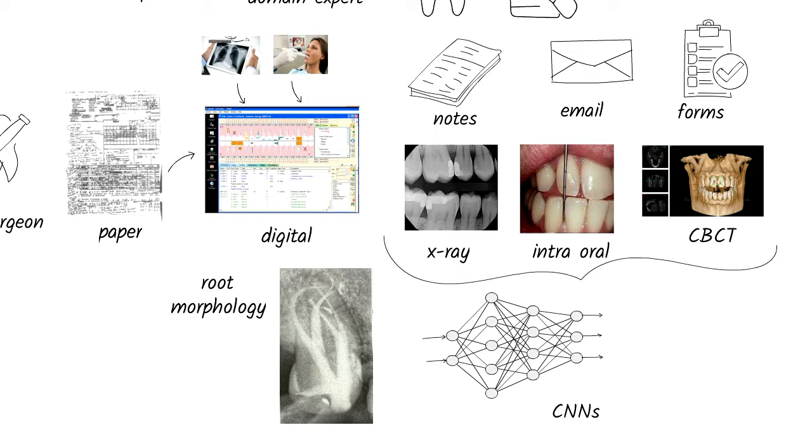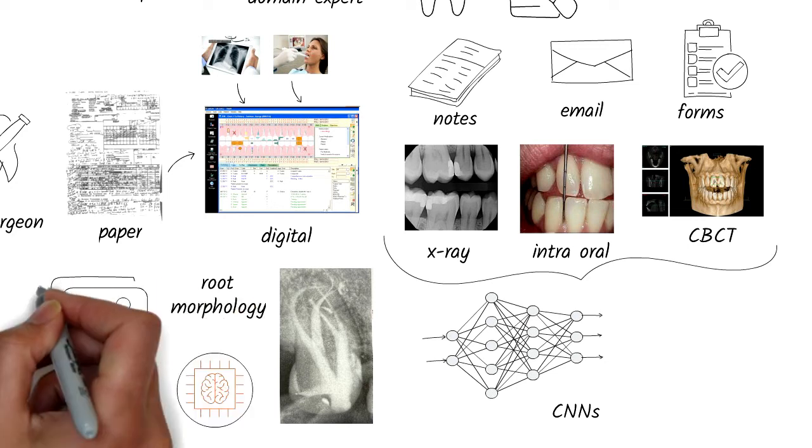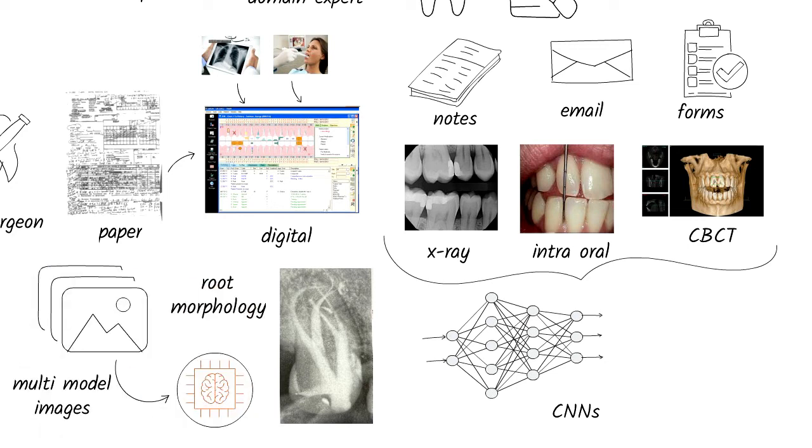Typically, an endodontist would look at images to map out root morphologies. Complex root morphologies, like this one, must be clearly mapped out to properly fill in all the canals during the root canal procedure. Missing any canals would exasperate the problems later. An AI system could help the endodontist because it overcomes the human limitations of being able to look at only one image at a time. The AI system can use multiple images and even different image modalities to automatically map out the root morphology.